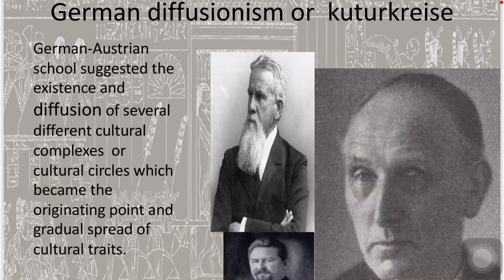On the other hand, we have German Diffusionism or Kulturkreis, inspired by Frederick Ratzel, Fritz Graebner, and Father William Schmidt in the early 20th century. This school also held that people borrow from others because they are basically uninventive. In contrast to Smith and Perry of the British school, who assumed that all cultural traits originated in one place — Egypt — and filtered out to cultures throughout the world, the German-Austrian school suggested the existence and diffusion of several different culture complexes or cultural circles, which became the originating points for the gradual spread of cultural traits. They believed that similarities among cultures are the result of overlapping cultural circles, and that these similar points also depict the chances of historical relationship among different cultures.